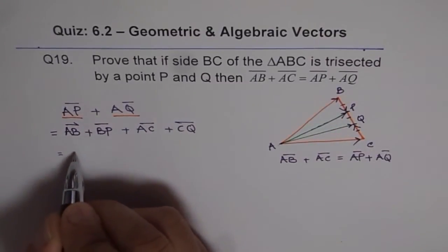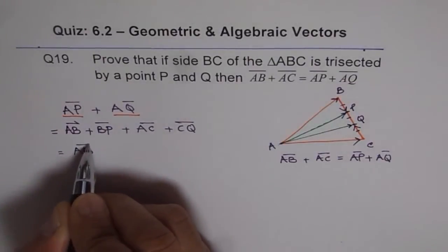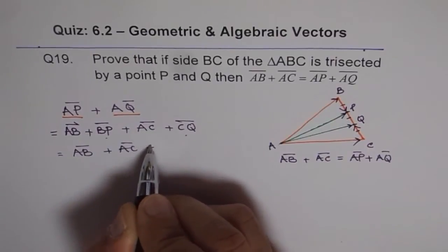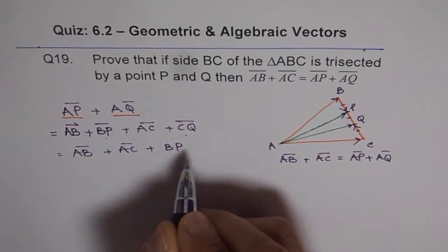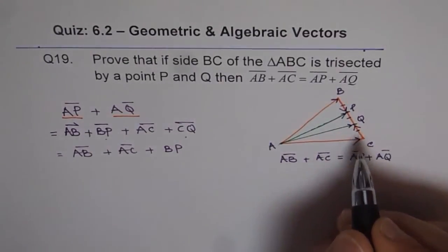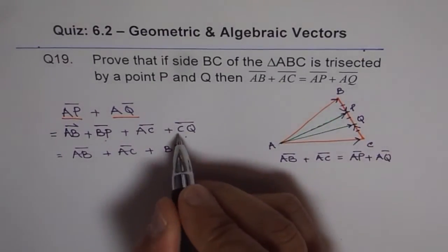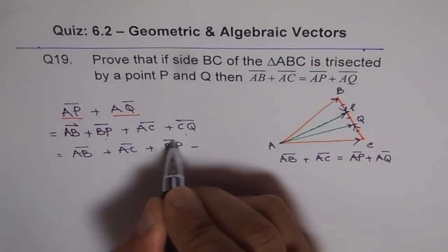So we will use that strategy. So we have AB and we will combine these two plus AC plus BP and CQ. Since it is a positive vector we could write this as minus BP. CQ can be written as minus BP.